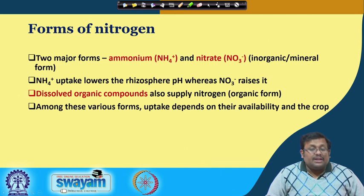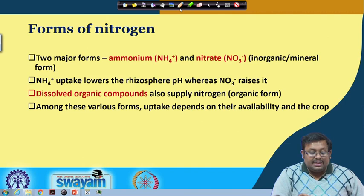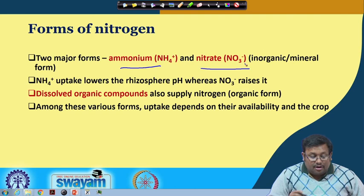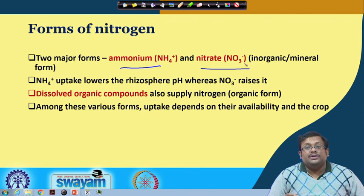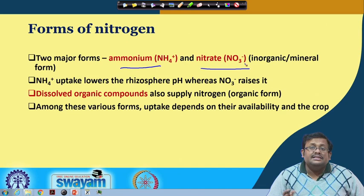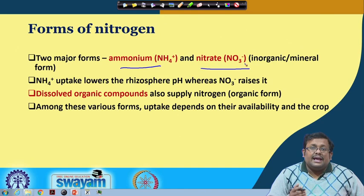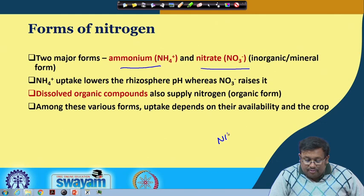What are the different forms of nitrogen? There are two major forms that plants can uptake: ammonium and nitrate — these are the inorganic, available forms. Ammonium uptake lowers the rhizosphere pH. As I told you in week 6 lectures, whenever a plant uptakes ammonium, it releases protons to balance the transfer of ions, resulting in lowering of pH. The uptake of ammonium releases H⁺ ions, which are responsible for soil acidity, so soil acidity increases when there is ammonium uptake in the rhizosphere region.